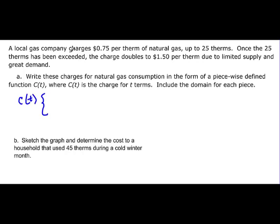Let's see what we have. The first part says that we have 75 cents up to 25, and it says once 25 is exceeded, then it changes. So that means it's going to include the 25. So we have 0.75 times X. That would be the 75 cents per therm, but the domain is going to be from 0, including 0, up to and including 25. And then it says once it has exceeded that, the charge doubles to $1.50 per therm.